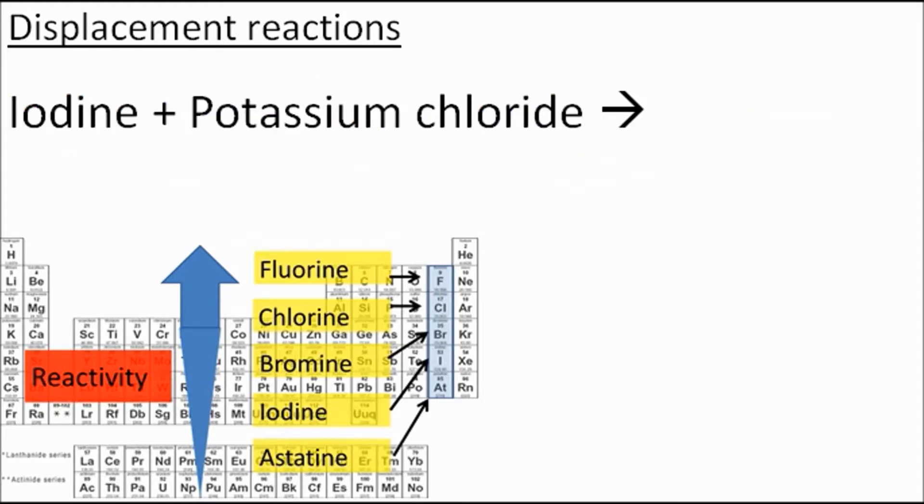Here's another one. Iodine and potassium chloride. What would we get? Here's iodine, and here's chlorine, which is stronger, which is higher up on the reactivity series of group 7s. Chlorine is stronger. Chlorine's already got hold of this potassium. Can iodine steal from chlorine? No, it can't, because iodine is lower down on the reactivity. So what we get here is no reaction at all. If they're higher up, they can steal from the other one. If they're lower down, they can't. Fluorine can steal from any of them, and astatine can't steal from any of them.